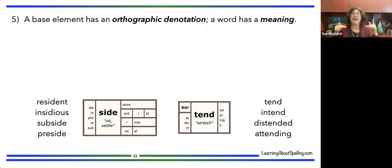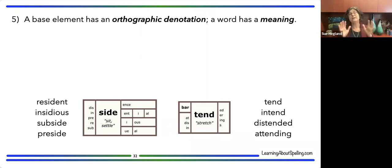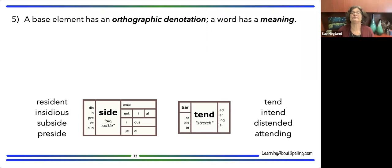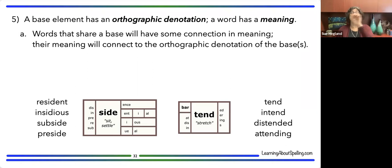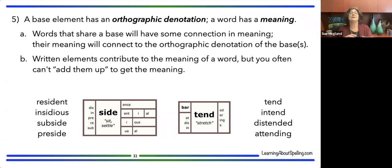Concept five: a base element has an orthographic denotation, and a word has a meaning. This is one of the main goals of my talk today. I often see people say morphology doesn't work all the time because you can't add up the morphemes and get the meaning — but that comes from thinking about oral morphology. At the level of written base elements, the elements don't have meanings per se. It's really helpful to say: a base element has an orthographic denotation, a prefix or suffix adds a certain sense, and a word has a meaning.